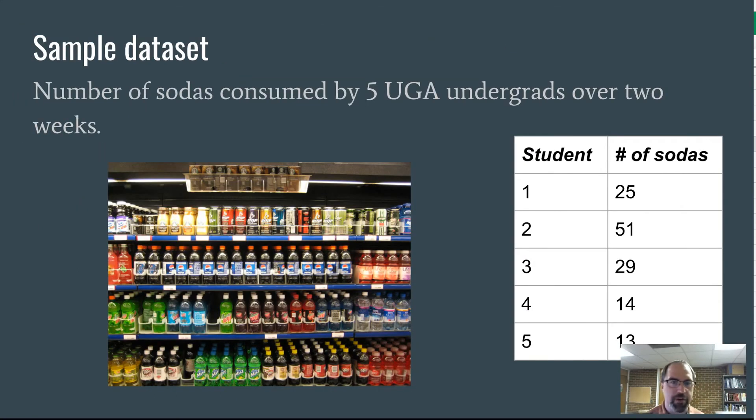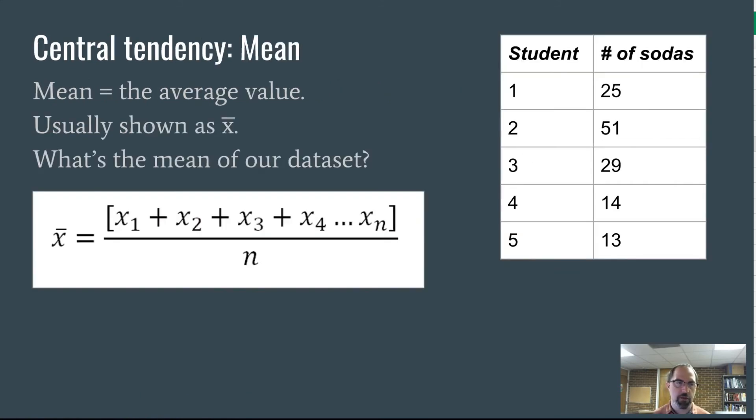Let's start with thinking about central tendency. We'll start with this sample data set, really random set of numbers. Let's say this is the number of sodas consumed by five UGA undergrads over two weeks. You asked five people to keep track of how many cans of soda they consume. Student one did 25 sodas, student two did 51, student three 29, student four 14, student five 13. How do we understand what's going on? What stats are going to do?